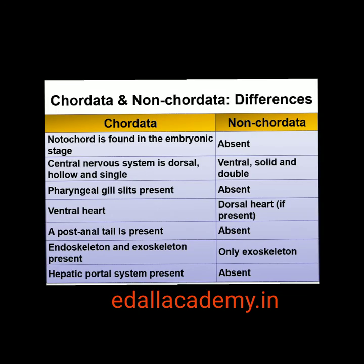Listen carefully — a comparison of salient features of chordates and non-chordates. 1. Notocord is present in chordates, while in non-chordates notocord is absent. 2. Central nervous system is dorsal, hollow and single in chordates, while in non-chordates central nervous system is ventral, solid and double.